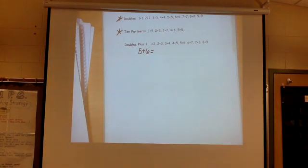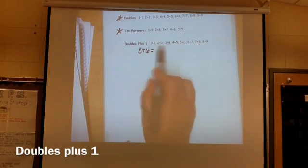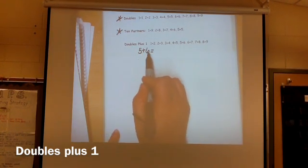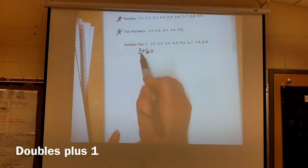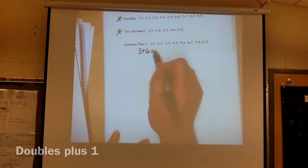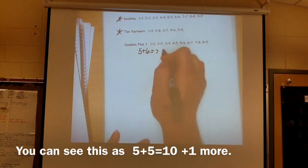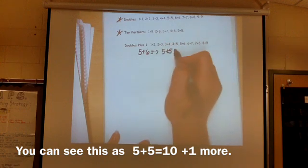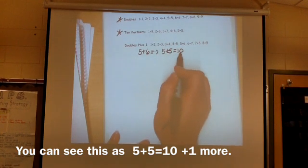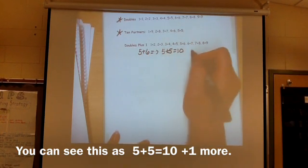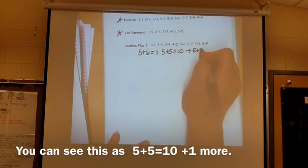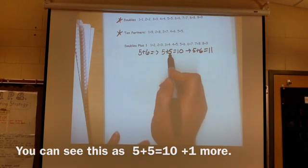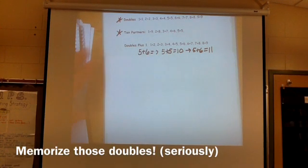For instance, doubles plus 1 are basically any two numbers that are neighbors or right next door to each other. And for instance, we look at 5 plus 6, and what we're going to see that as, is a lot of us are going to see that as 5 plus 6 is actually the same thing as saying 5 plus 5. I'm going to see that as the double 5 plus 5, and that equals 10. Well, if 5 plus 5 equals 10, then I know 5 plus 6 is going to actually equal 11 because 6 is just one more than that 5. And the kids get this too once they understand those doubles. This makes total sense to them.